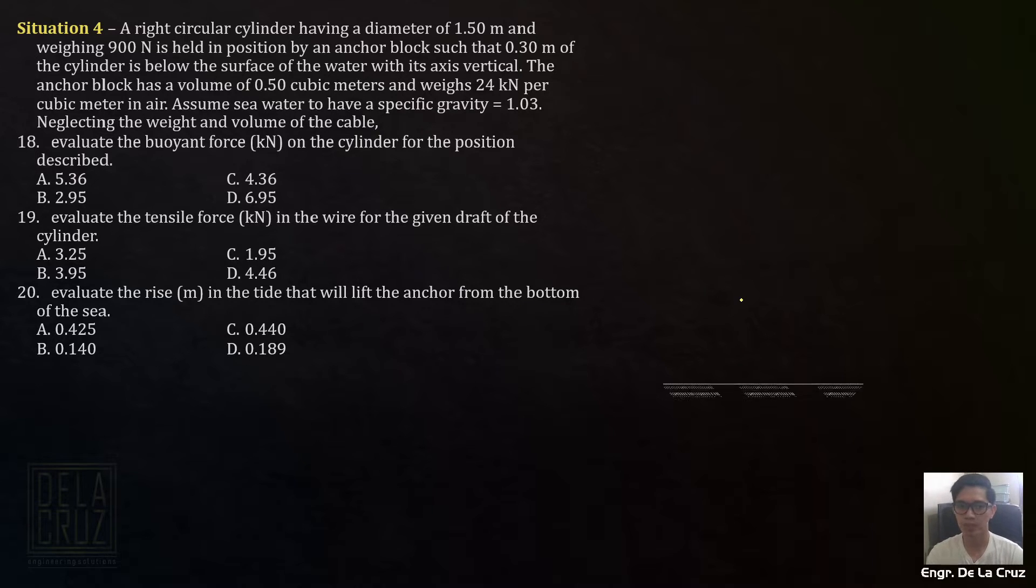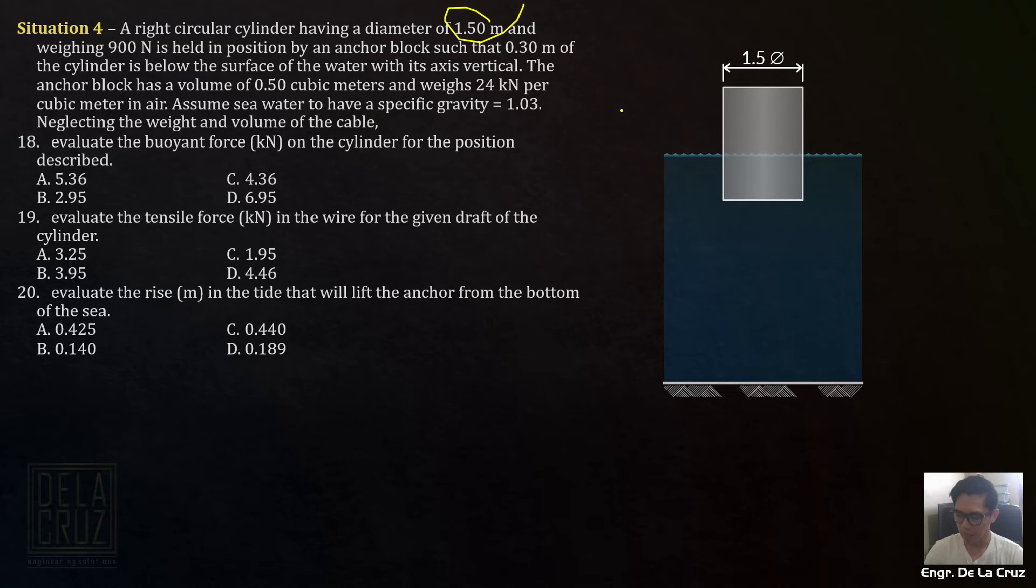First, you need to interpret the figure. Suppose this is the bottom of the sea. A right circular cylinder is floating, diameter given is 1.5 meters. According to this, it is held in position by an anchor block such that 0.3 meters of the cylinder is below the surface of water with its axis vertical. It's standing vertically, 0.3 meters below the surface of water. It's being held from floating up totally because of this anchor block. There's a rope connected to the anchor block. The anchor block is too heavy, the buoyant force cannot lift it alone.